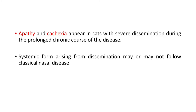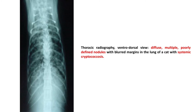Apathy and cachexia appear in cats with severe dissemination during the prolonged chronic course of the disease. The systemic form arising from dissemination may or may not follow classical nasal disease. This is a thoracic radiograph — ventrodorsal view — of a cat with systemic cryptococcosis, showing diffuse multiple poorly defined nodules with blurred margins in the lungs.